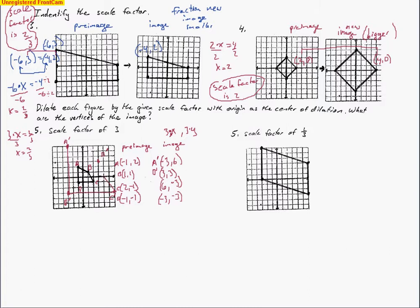A scale factor greater than 1 makes it bigger; smaller than 1 makes it smaller. This next problem has a scale factor of 1 third, so the image is going to get smaller. Let me name the points first and plot the pre-image. Point A is 3 spaces left and 6 spaces up: negative 3, 6. Point B is 6 spaces right, 3 spaces up: 6, 3. Point C is 6 spaces right, 3 spaces down: 6, negative 3. And point D is 3 spaces to the left: negative 3, 0.